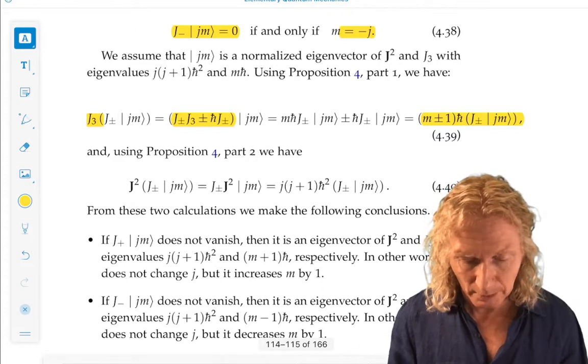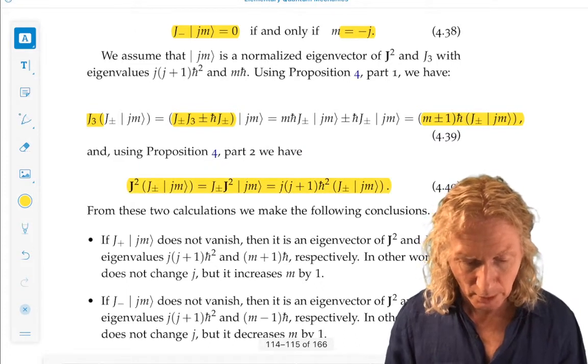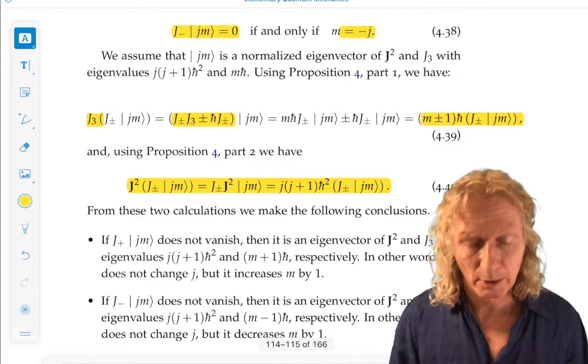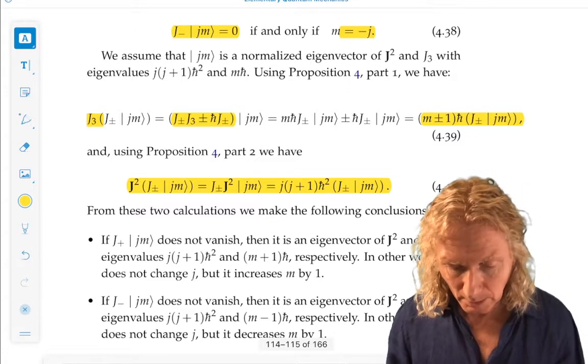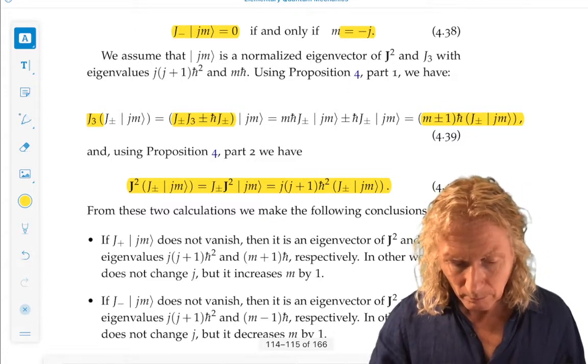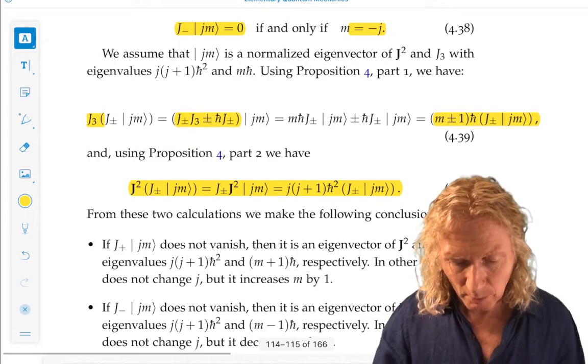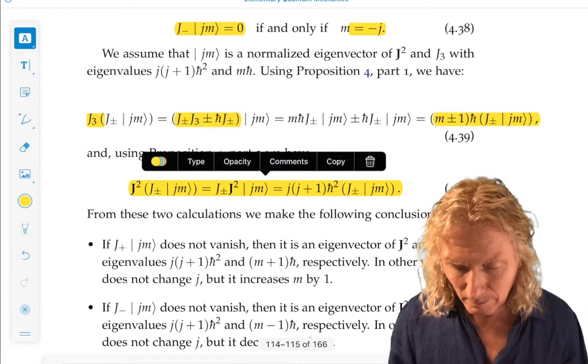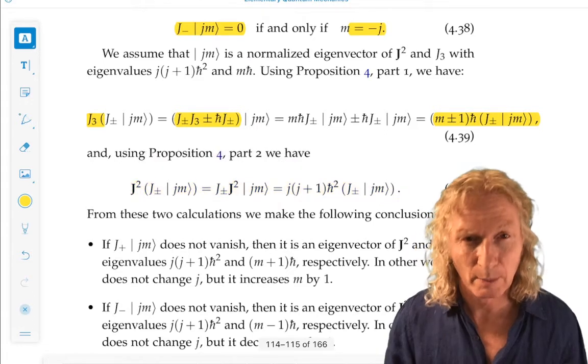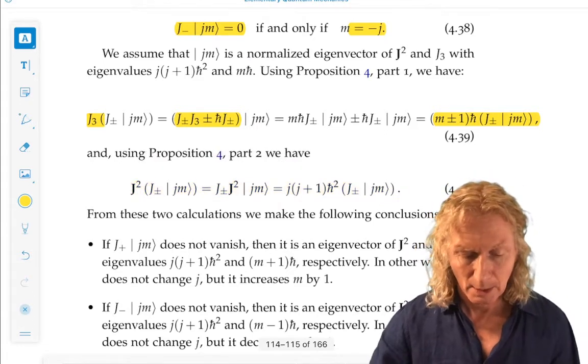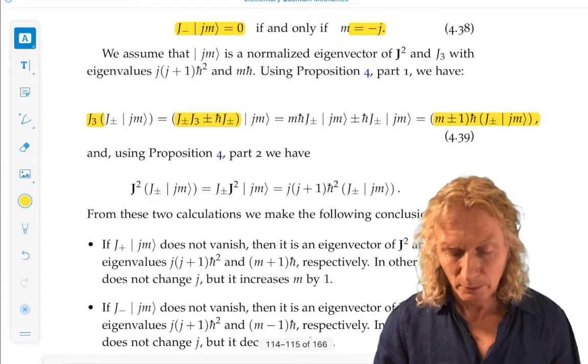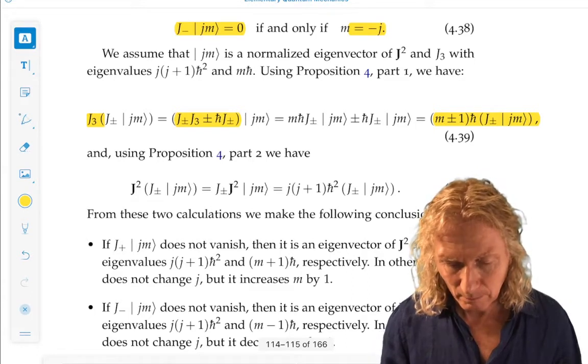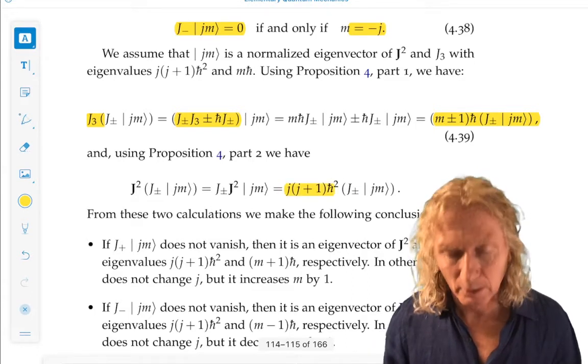Similarly, J squared, acting on J plus or minus J, M, we see that J plus or minus, acting on ket J, M. I'm being a little sloppy with my terminology there. It gives us an eigenvalue, but it's an eigenvector of J squared.